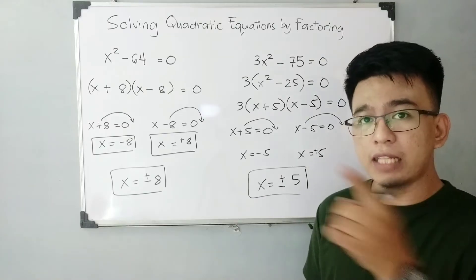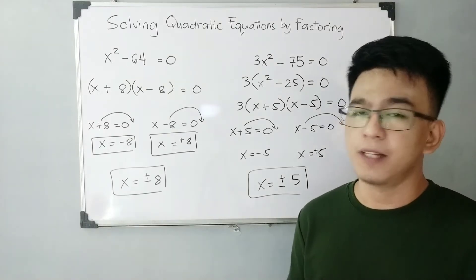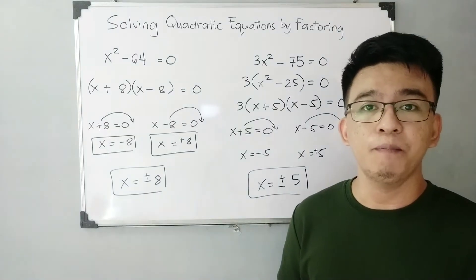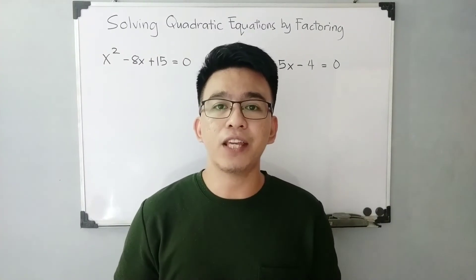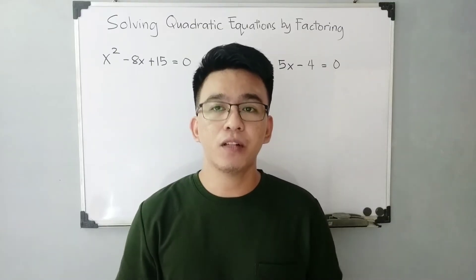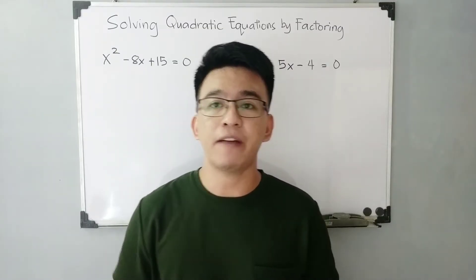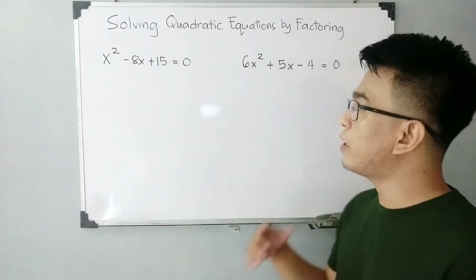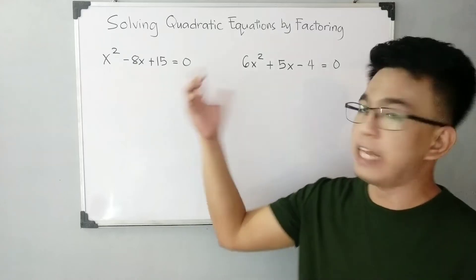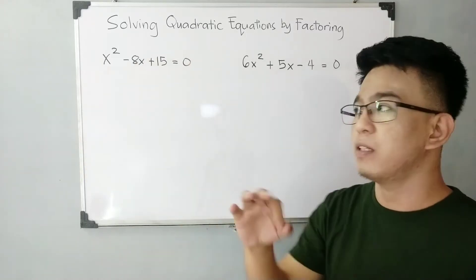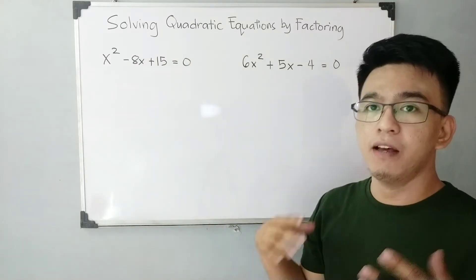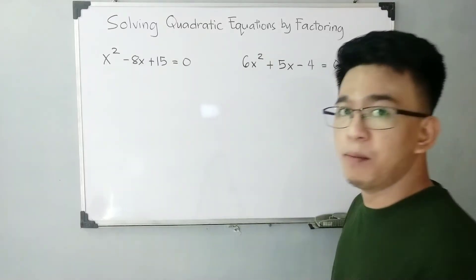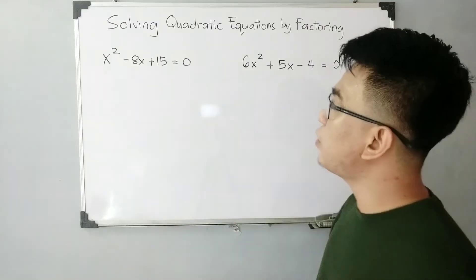In the next part of our video, I'll give you two more examples to help you master solving quadratic equations by factoring. Let's continue with the third and fourth examples. We have two quadratic equations whose left sides are trinomials, but we will still apply factoring to solve them. We have x squared minus 8x plus 15 is equal to zero.